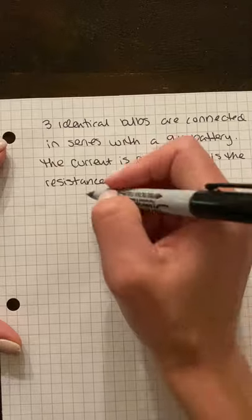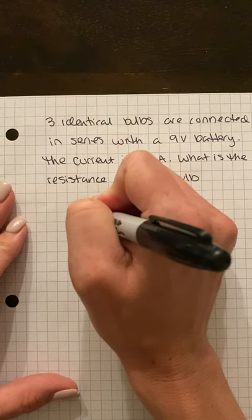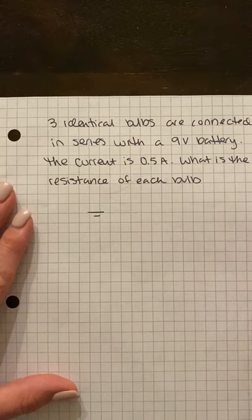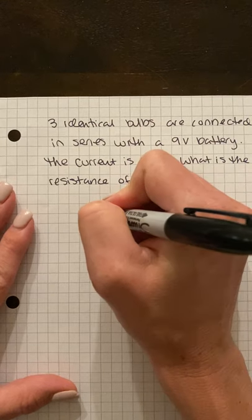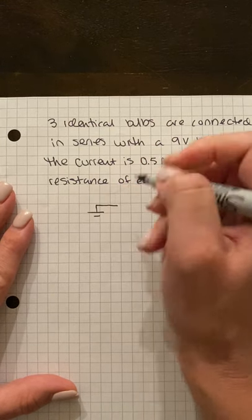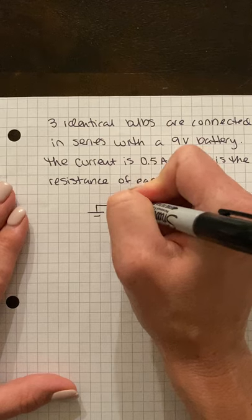So I'm going to first draw my circuit. I want my battery—the positive terminal of my battery is the longer one—and then we want three light bulbs, so one...